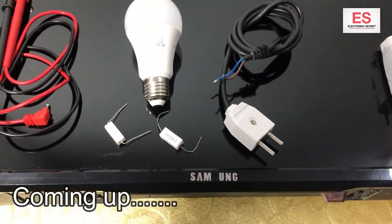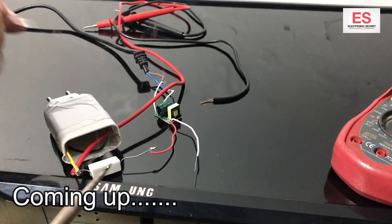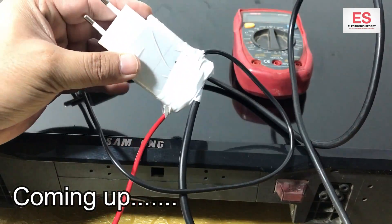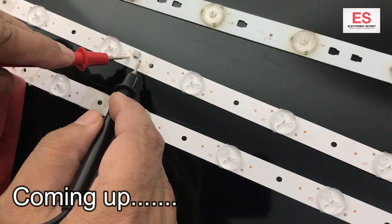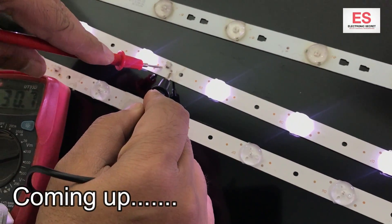Hi guys, welcome to my channel Electronic Secret. Today I am showing you how to make an LED tester using a multimeter. I have made this with the help of an LED bulb and you can see that it is working fine. It is used for checking LED backlight strips, LED bulb strips, and you can also check zener diodes from it.